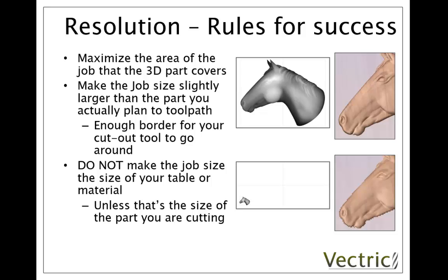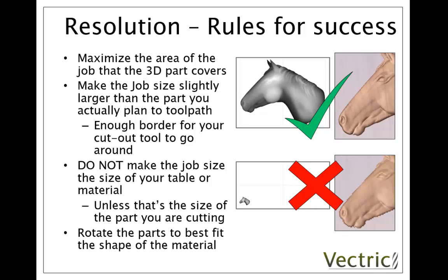So very importantly, maximise the area of the job that the 3D part covers. A good rule of thumb is to look at the part you plan to toolpath and add about an inch or a couple of centimetres around it, assuming that's large enough to accommodate any cutout operation. In some situations you may also need to rotate the part to best fit it into your work area in order to maximise the number of pixels being used, especially if there's a lot of white space in your design that isn't being cut.